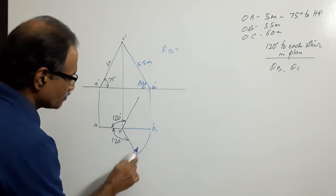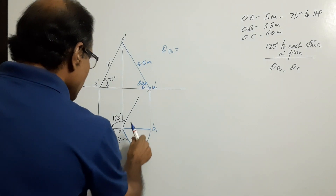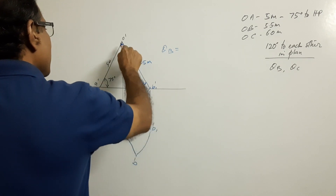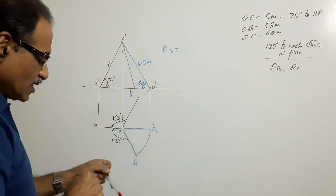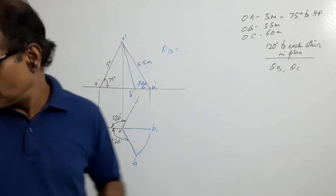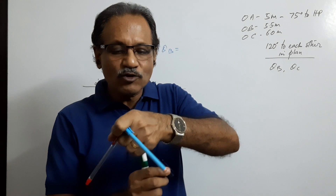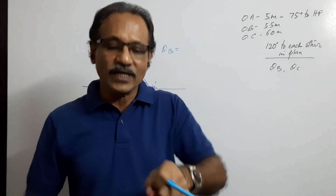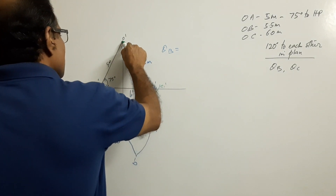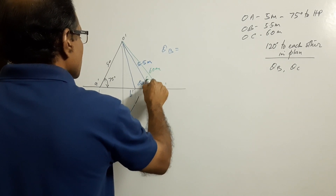Since B is on the original plan line, use O as center and OB1 as radius to cut an arc — this gives B, so OB is the final plan of the leg. Project B to the XY line to get B-dash, and O-dash B-dash is the elevation of the leg. That part is over. Now for leg OC: lift C from the ground and make it parallel to the VP. Its elevation — true length — is 6 meters. Cut an arc with O-dash as center and radius 6 meters to get C1-dash. This angle is theta C.